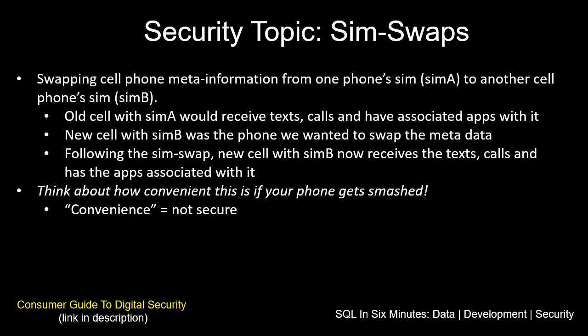So what is a sim swap? A sim swap is when we swap cell phone meta information from one phone's SIM to another cell phone's SIM. When we have a cell phone with a SIM card that's connected to a network, that network provides meta information like a cell phone number. That cell phone number is associated with receiving calls, receiving texts, and the apps that you install. That meta information can be swapped from SIM A to SIM B.